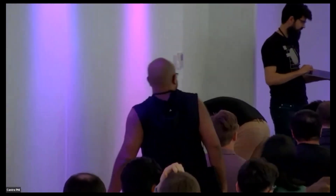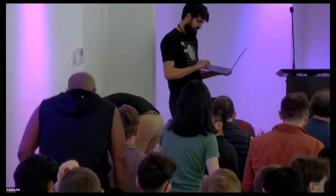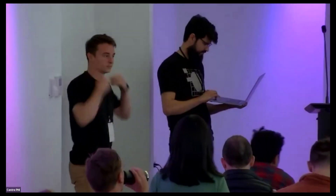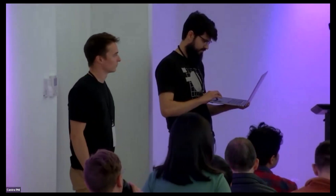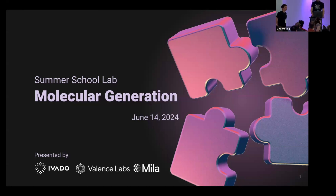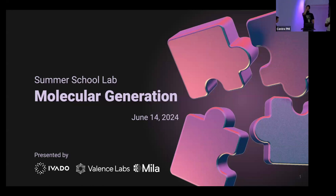The lab today will be led by Emmanuel Bengio and Julian Roy. Emmanuel is an ML scientist who leads the exploration unit at Valence Lab, where he works on GFlowNets and their application to molecular generative models. He did his PhD at Mila under Joel Pino and Doina Precup, studying generalization in deep reinforcement learning. Julian is a machine learning scientist also at Valence Lab, whose PhD work focused on imitation learning, constrained reinforcement learning, and reward specification. He is now applying these techniques in the context of active learning for biological data and molecular generation.